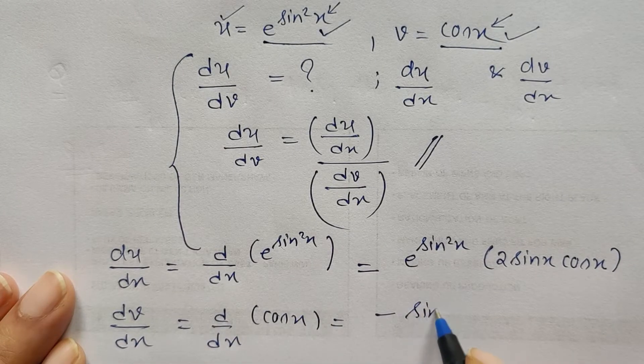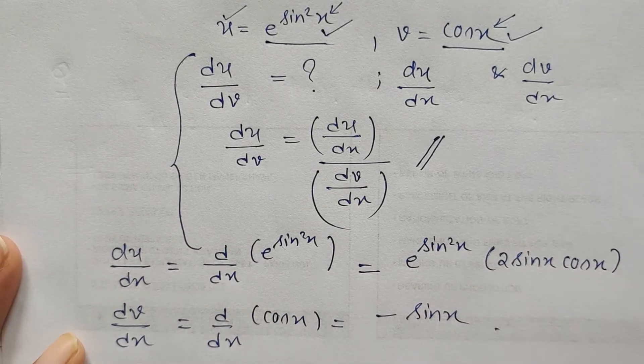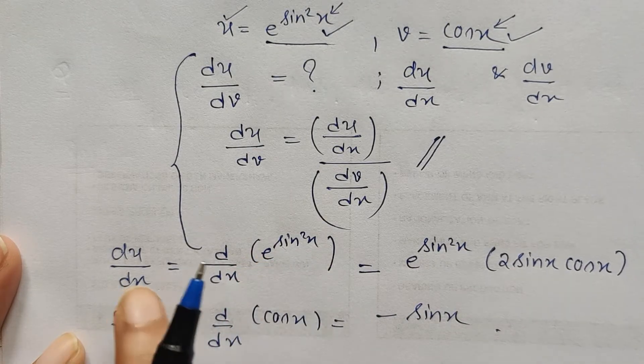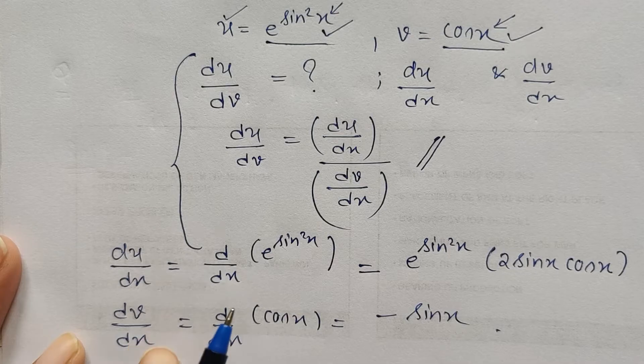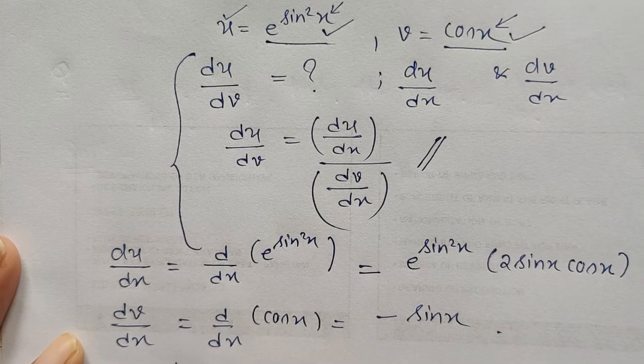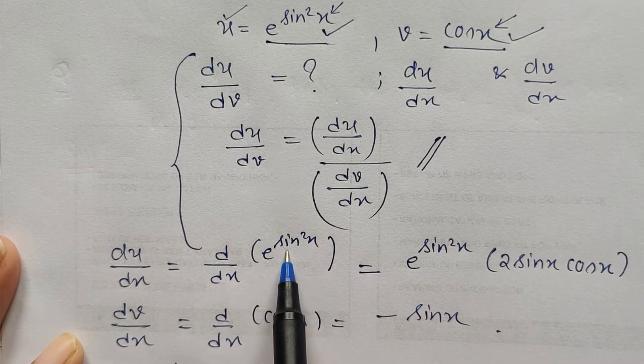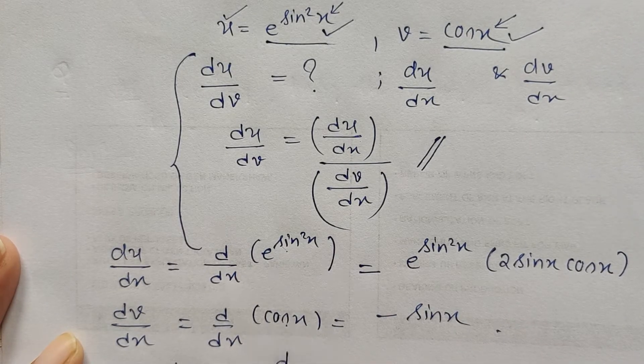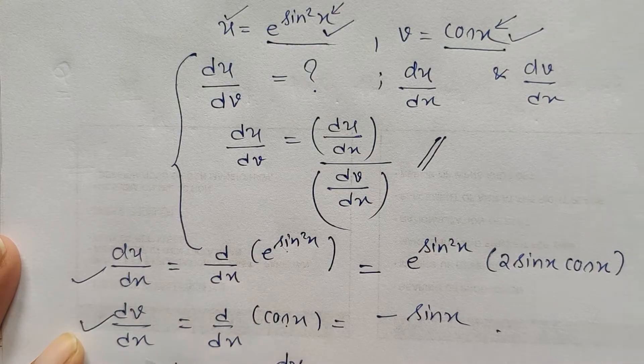Now as I said, to differentiate with respect to cos x this thing, what we have to do is just divide this by this. So du by dv, that is derivative of this with respect to cos x, is the ratio of the two - ratio of these two.